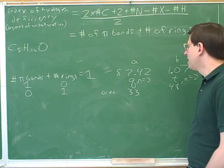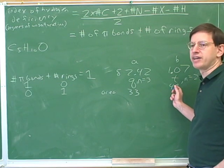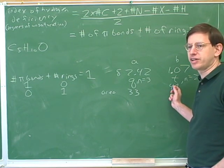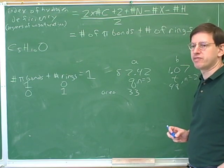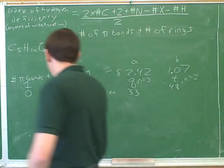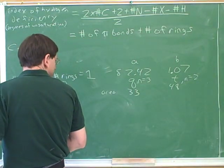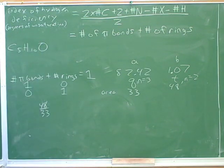Something else we have to do is try to translate these areas into the number of hydrogens. We need to try to translate these areas into the number of hydrogens. Remember that the areas are proportional to the number of hydrogens. The areas are proportional to the number of hydrogens. Here we have a ratio of 33 to 48. 48 to 33. Let's try to reduce that ratio. Do you have your calculator with you? I didn't bring it today.